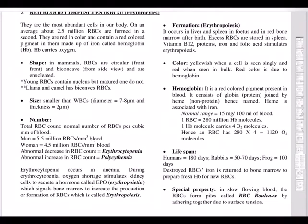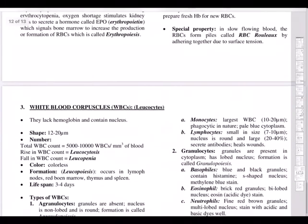The total RBC count is checked during blood tests. Normal RBC count is 5.5 million for men and 4.5 million for women. The lifespan of RBCs is 120 days. A special property of RBCs is that in slow-flowing blood, they form piles called rouleaux due to surface tension.